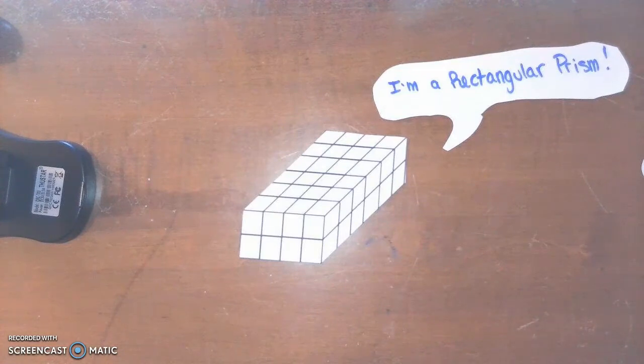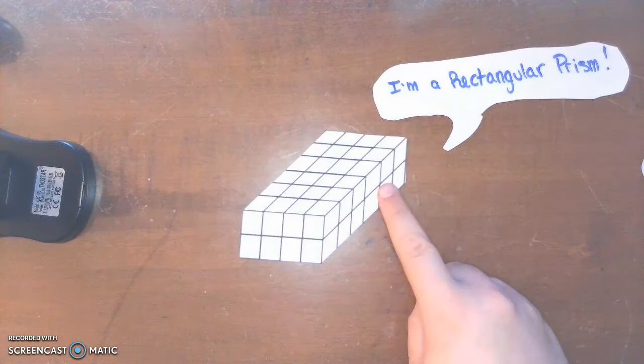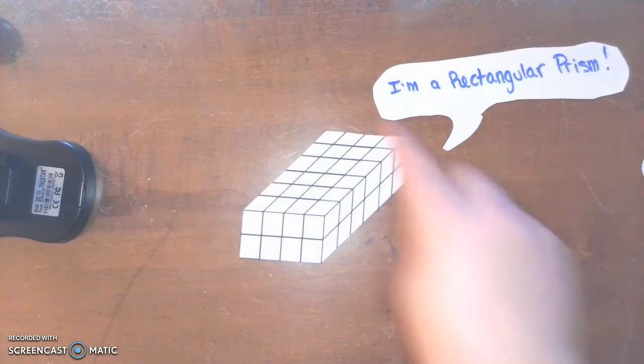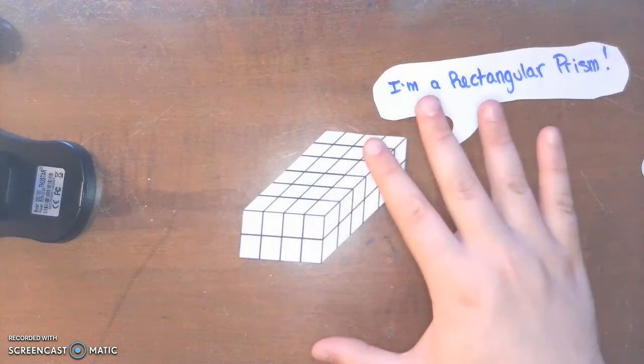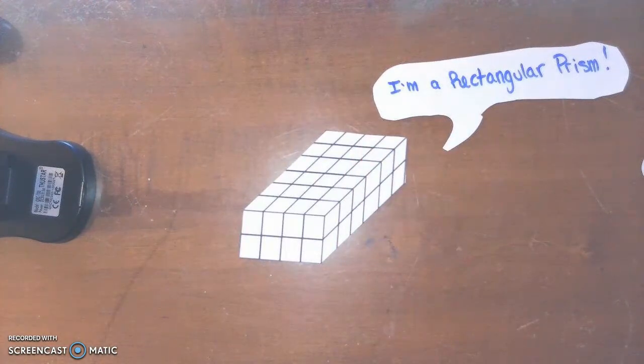And we've been concentrating on counting these cubes, these unit cubes, in order to determine the rectangular prism's volume. And volume is just how much space the rectangular prism takes up or anything takes up.